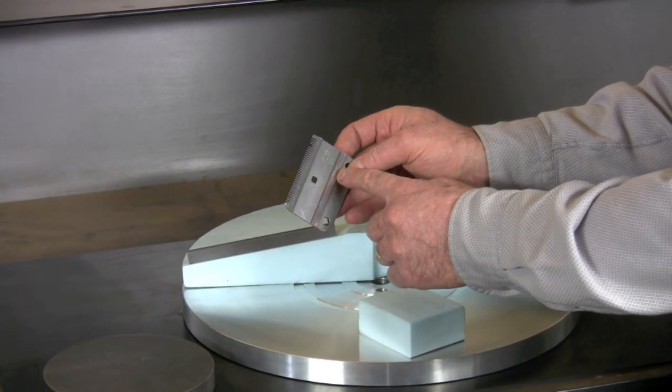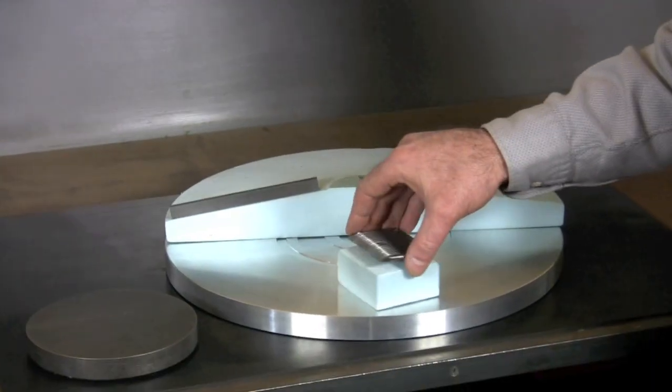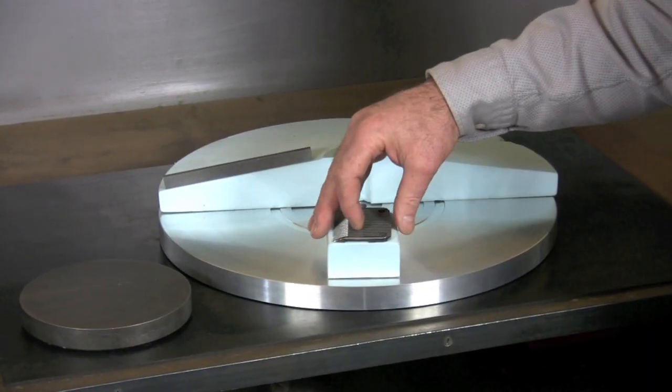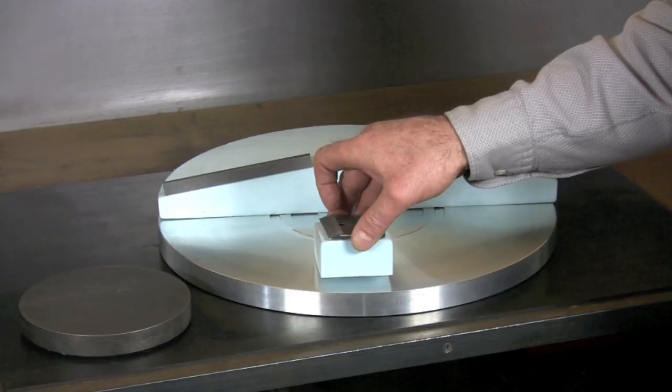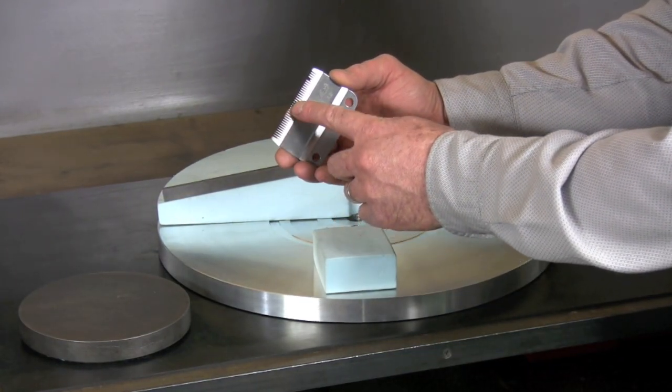The high point should be the tips of all the teeth, and the back of the back rail. Now if the shape of the wheel is truly represented, that should be an equal amount of burnish down each tooth, all the way across.